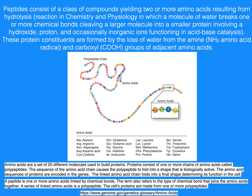A peptide is one or more amino acids linked by chemical bonds. The term also refers to the type of chemical bond that joins the amino acids together. A series of linked amino acids is a polypeptide. The cell's proteins are made from one or more polypeptides.